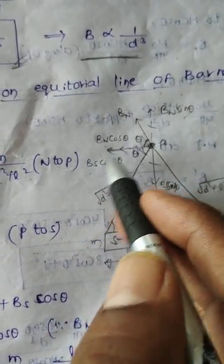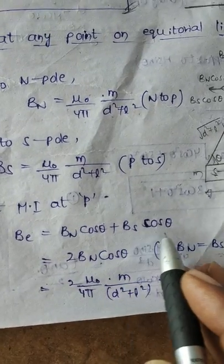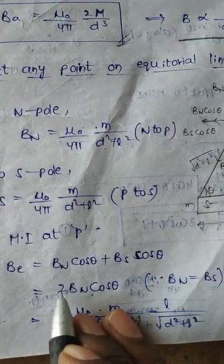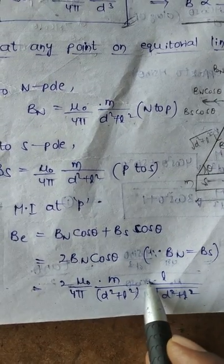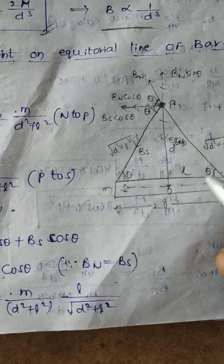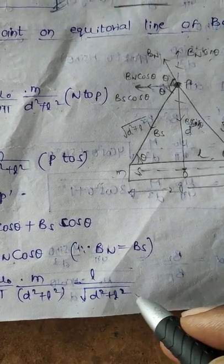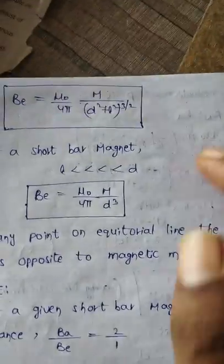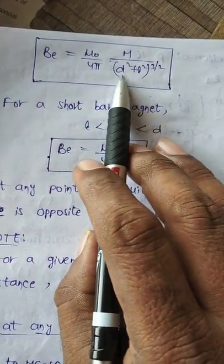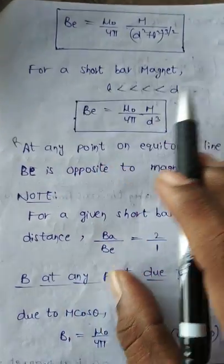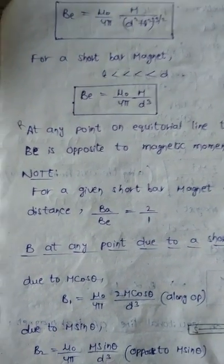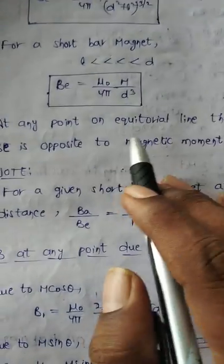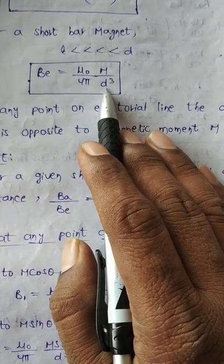The net magnetic field at P is BN cos theta plus BS cos theta. Since BN equals BS, this gives 2BN cos theta. From the diagram, cos theta equals L divided by root of (D^2 plus L^2). On solving, B equals mu_0 by 4pi into M by (D^2 plus L^2) to the power 3/2. For a short bar magnet where L << D, B_E equals mu_0 by 4pi into M by D^3. So on the equatorial line it is M by D^3, while on the axial line it is 2M by D^3.